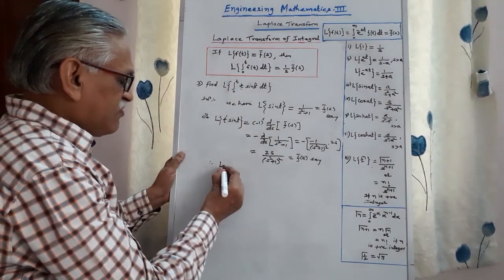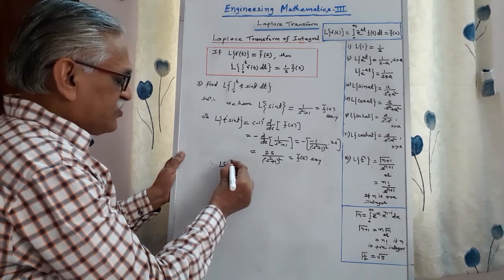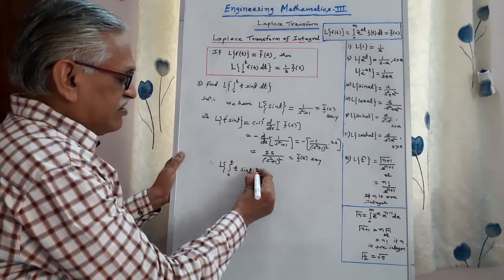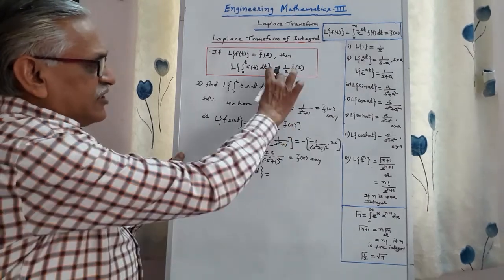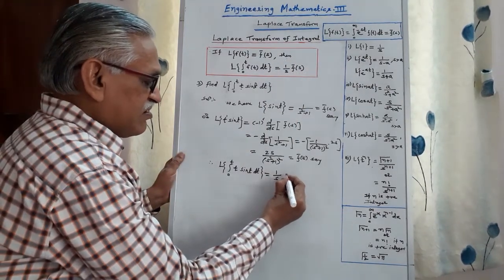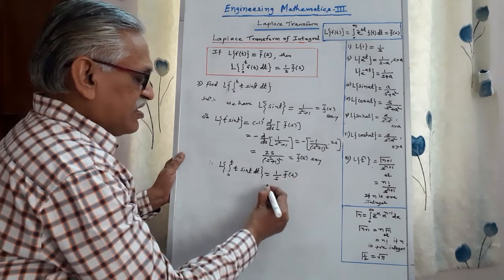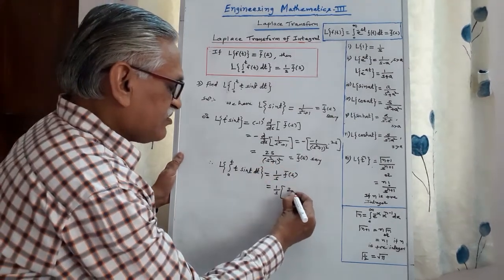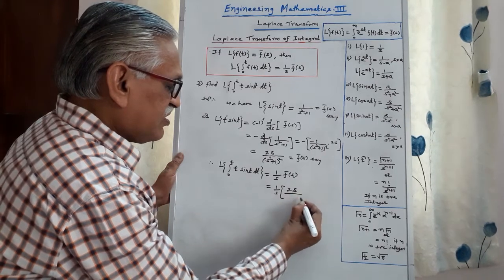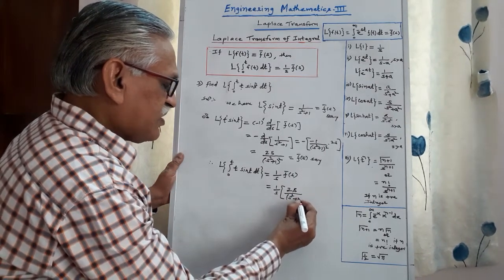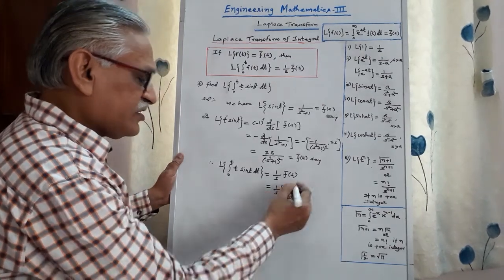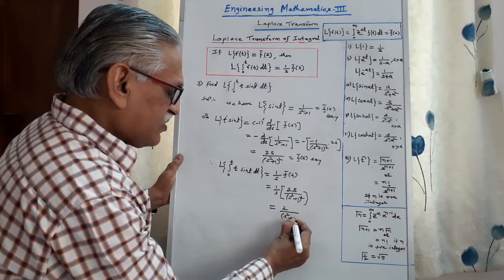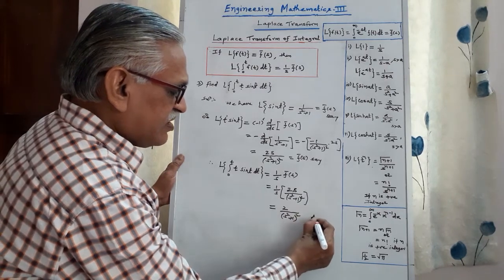Therefore, the Laplace Transform of the integral from 0 to t of t·sin(t) dt is, as per this theorem, 1/s into F̄(s). Therefore it equals 1/s · [2s/(s² + 1)²]. Simplifying, s gets cancelled, giving the final answer: 2/(s² + 1)² as the required Laplace transform.